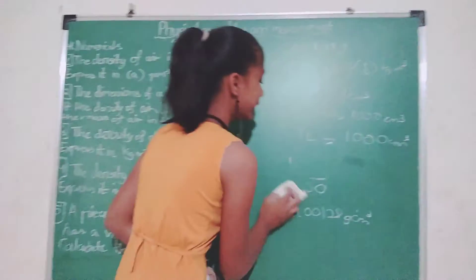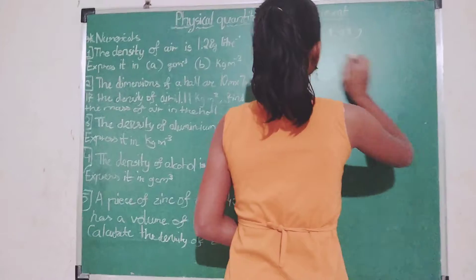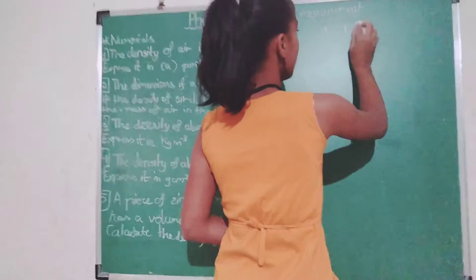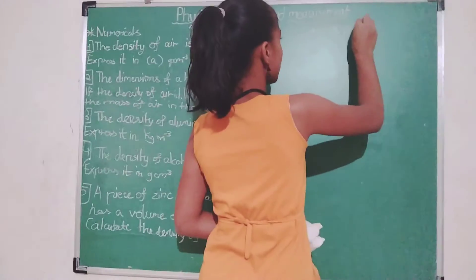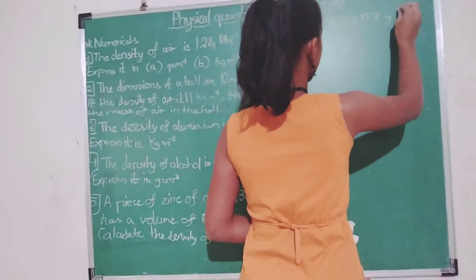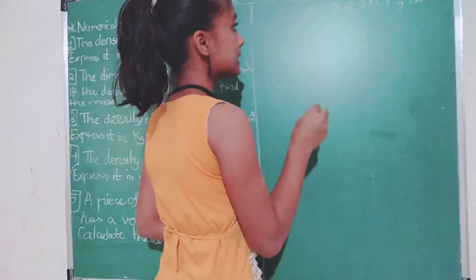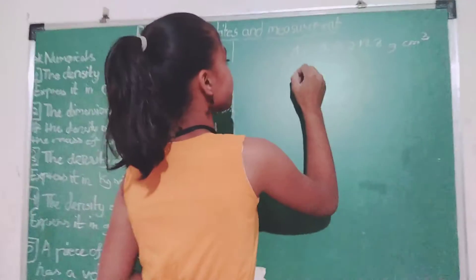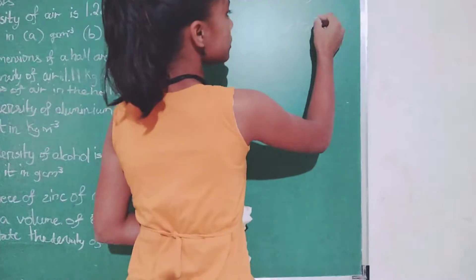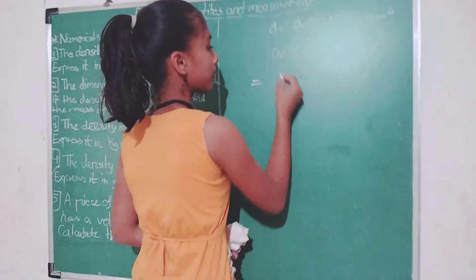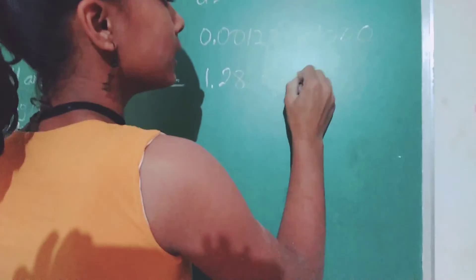Now we have to convert it into kg per meter cube. The density is 0.00128 gram per centimeter cube. We have to do the opposite — we multiply the density by 1000. So our density multiplied by 1000 gives us 1.28 kg per meter cube.